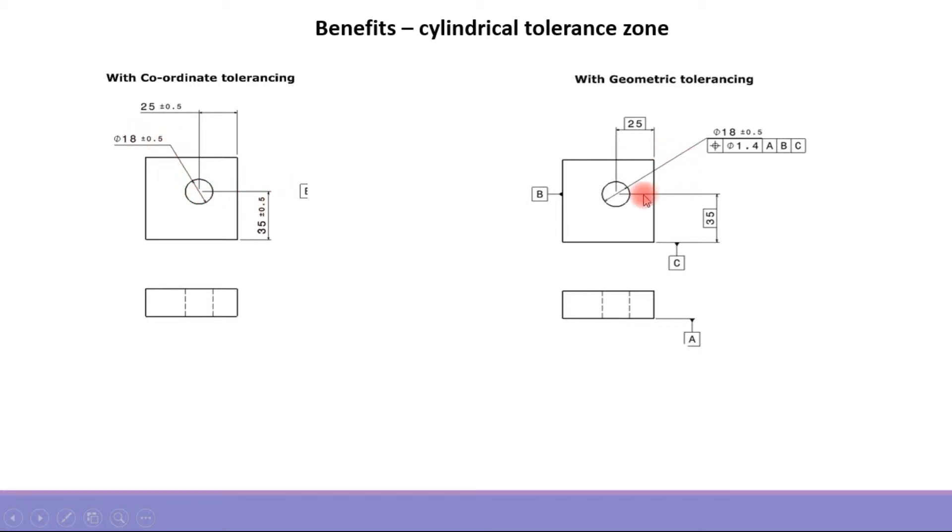In the geometric tolerance drawing, the basic dimensions will be 35 and 25, and the datums will be provided A, B, and C. There will be a feature control frame callout on the size feature of size, saying that the position of the hole should lie within a tolerance range of 1.4 with respect to the primary, secondary, and tertiary datums.